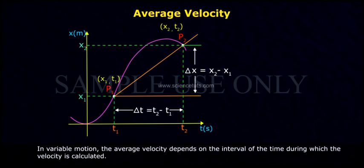In variable motion, the average velocity depends on the interval of time during which the velocity is calculated.